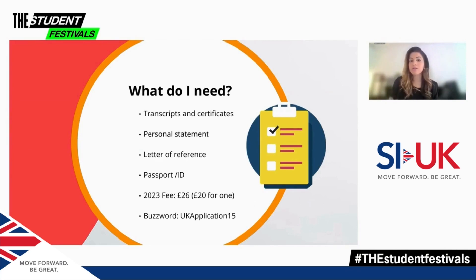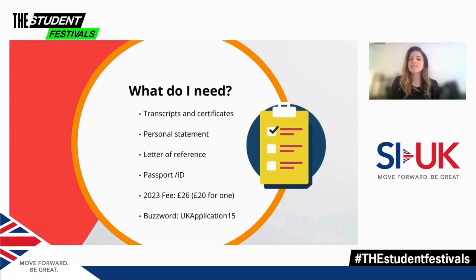Each university usually provides two types of offers: a conditional offer or an unconditional offer. An unconditional offer is what you're actually aiming to get, which means you're guaranteed accepted into the university. Whereas conditional means the university wants you there, but there are extra conditions you need to meet in order to enroll — this could be things like an IELTS score or a pending certificate.